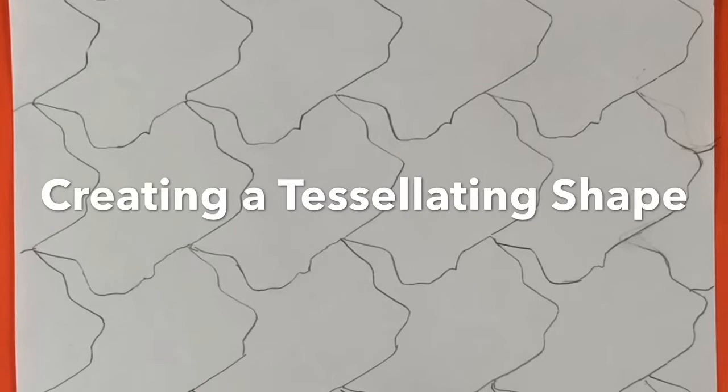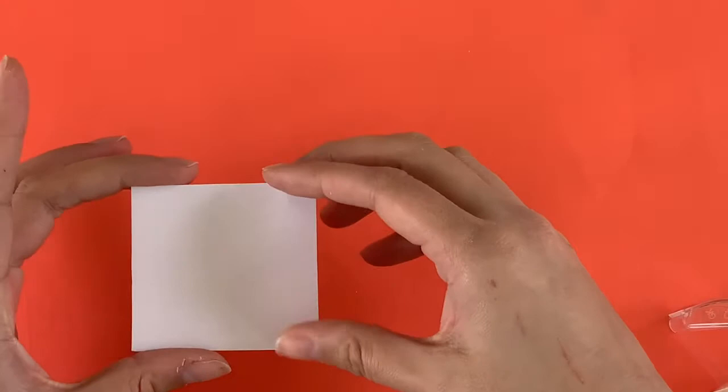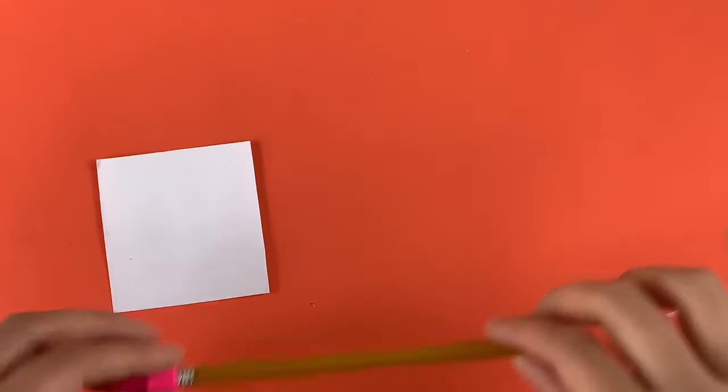To create this you're going to need a square of paper, mine is about two inches by two inches, and the thicker your paper the easier this is going to be because we are going to be tracing this shape when we're finished. You're also going to need a pencil, some scissors, and some tape. It doesn't have to be clear tape, it can be any type of tape.